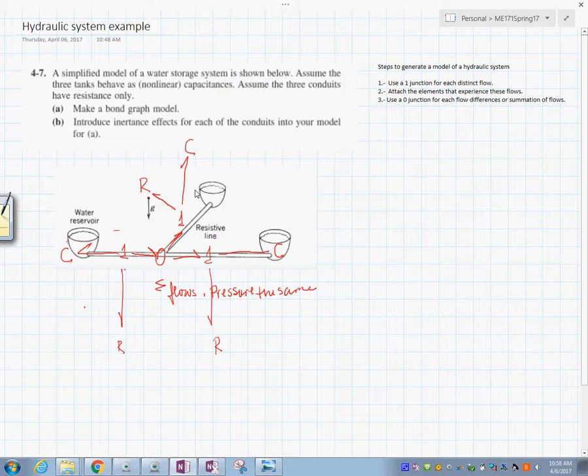Because you see, this one is a reservoir. This is a water storage system. Assume the three tanks behave like nonlinear capacities and assume the conduits have only resistance. Make the bond graph model.